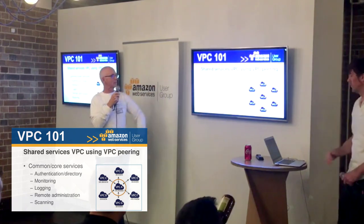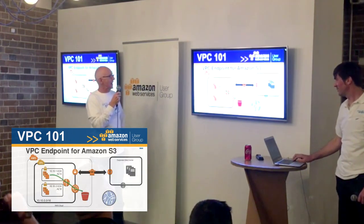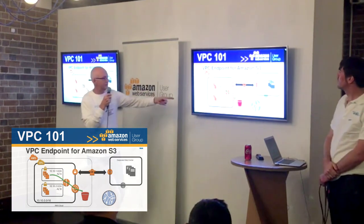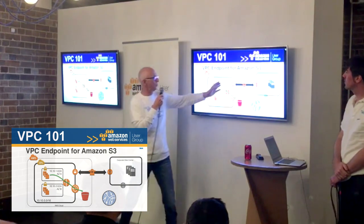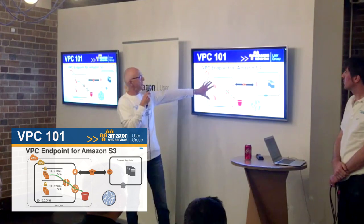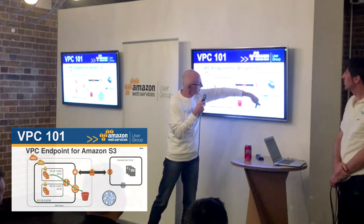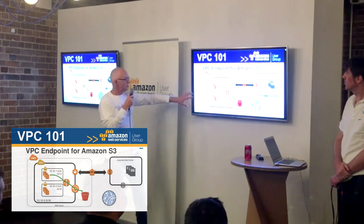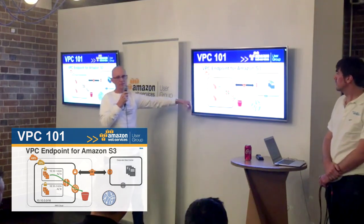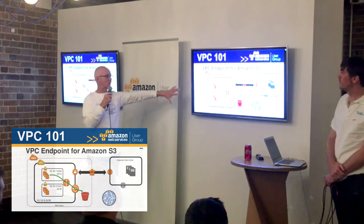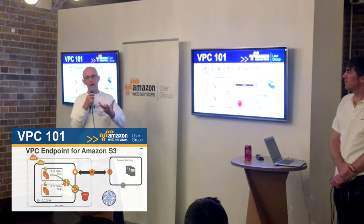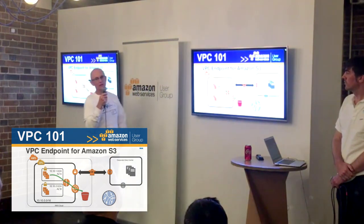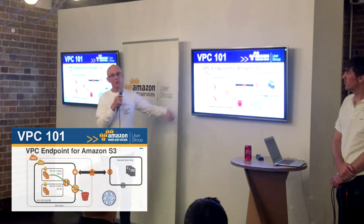The last thing I'll mention is S3 endpoints. Normally when you access S3 from a corporate data centre with no internet access, you'd go out to the internet and into S3. Amazon has made S3 endpoints so from your local network you can connect directly to S3. The difference in speed is quite amazing — if you're transferring content, doing it directly rather than out through the internet is much faster, and it costs you less money too.